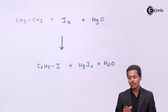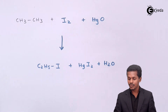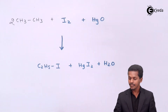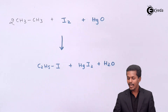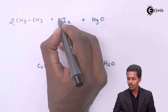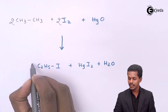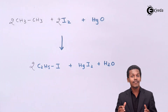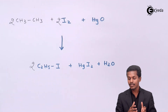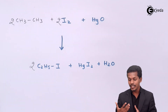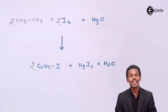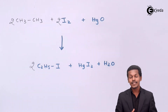Since the reaction is not balanced, we need to balance it — multiplying the ethane and C2H5I by 2, and also multiplying I2 by 2. This gives us the balanced reaction showing ethane being converted to ethyl iodide using iodine and an oxidizing agent HgO.